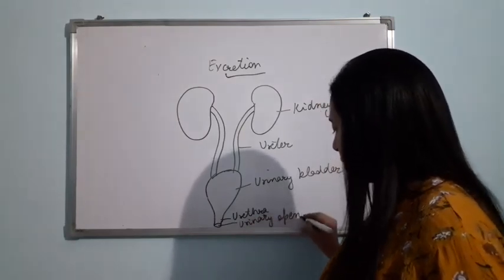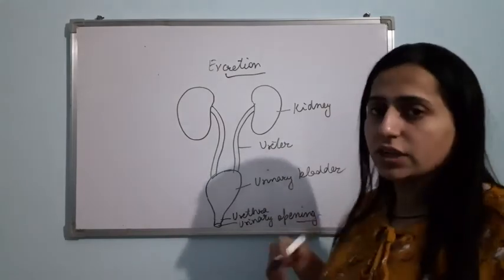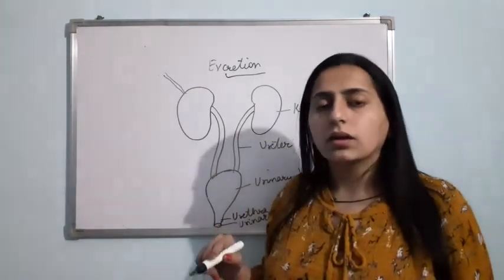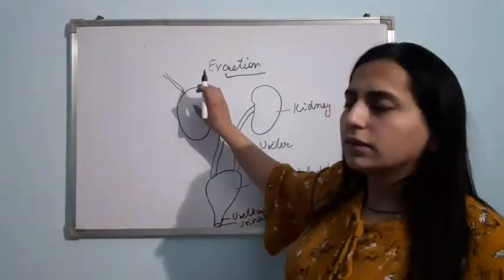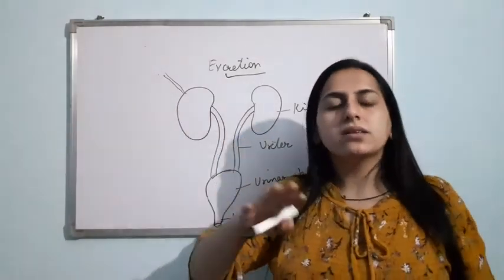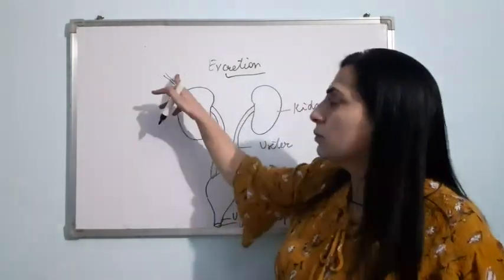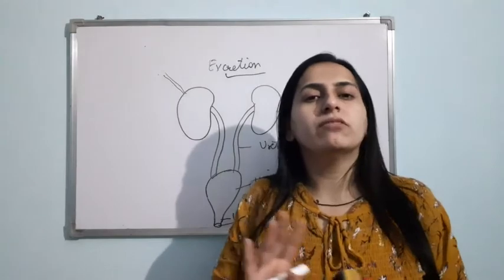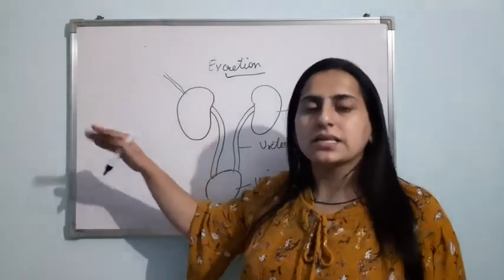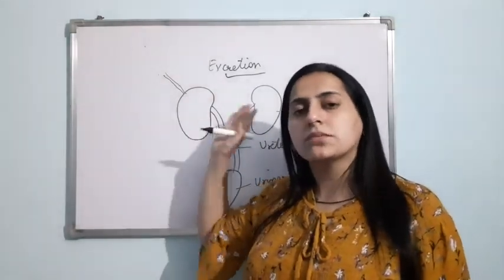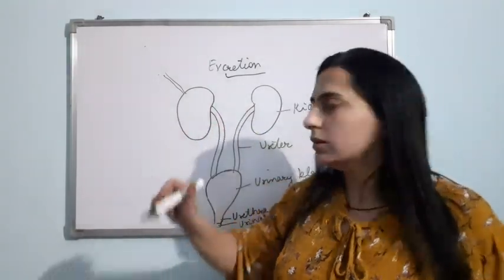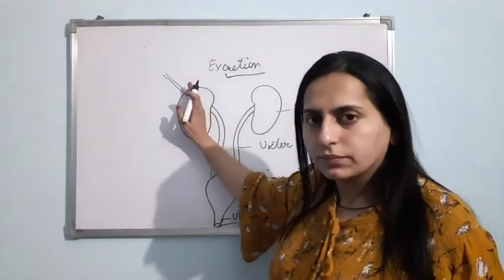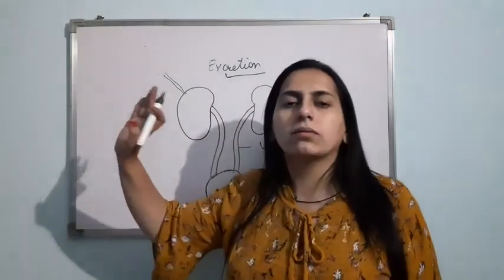Now let us understand the process of excretion — how excretion takes place in the human body. The blood will come into the kidney. In the kidney, the waste materials will be filtered out. The blood will enter the kidney, the waste materials will be filtered out, and the useful substances will be absorbed back by the blood. The harmful substances will be filtered out and will remain in the kidney.